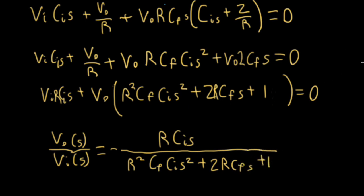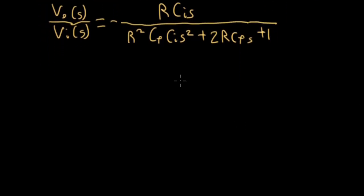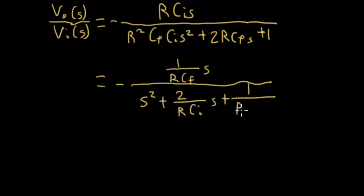Now, in order to get this closer to our usual canonical filter form, I want S squared to be by itself without any coefficient in front of it. So what I'll do is I'll divide the numerator and the denominator by this mess here. So in the numerator, I'll have 1 over R, CF, times S, and then down here, I'll have S squared plus 2 over R, CI, S, plus 1 over R squared, CF, CI.